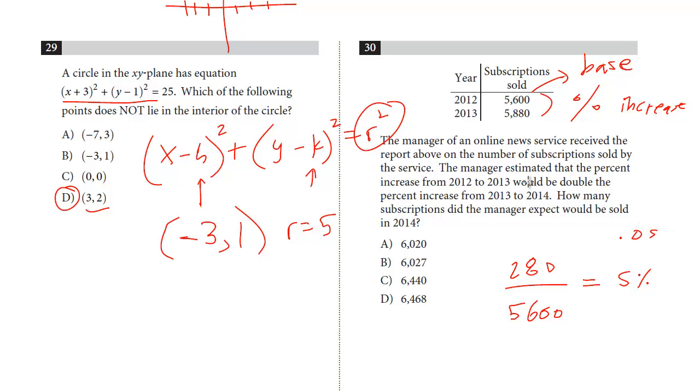This will give us the original percent change. It's 5% or 0.05. And now we're told that the percent increase from 2012 to 2013, which we just determined is 5%, would be double the percent increase from 2013 to 2014. So this next increase is only going to be half that, which is 2.5.